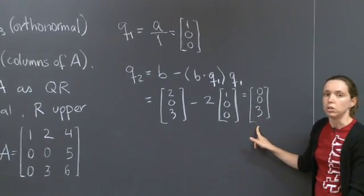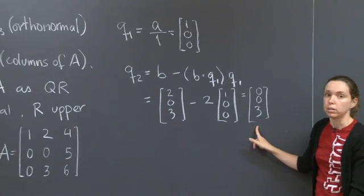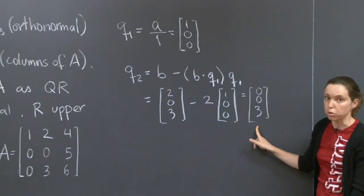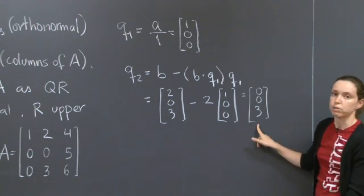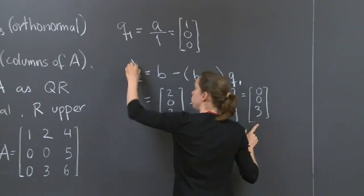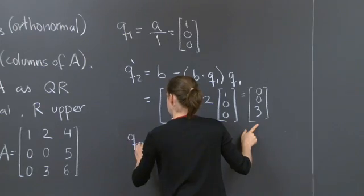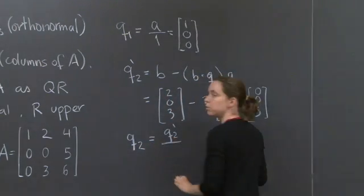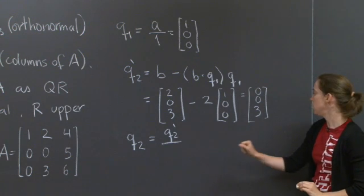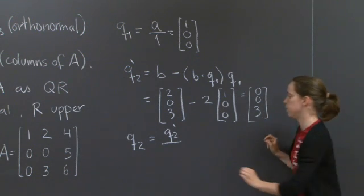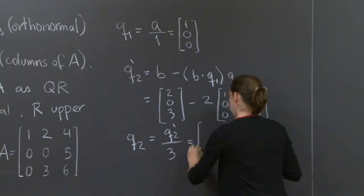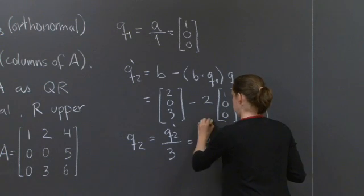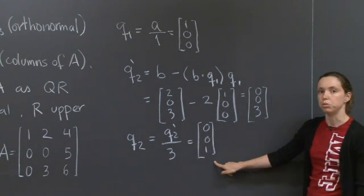We need it also to be length 1, because we want these two vectors to be orthonormal. So this is not actually Q2. Let's call this one Q2 prime and set Q2 equals to Q2 prime divided by its length, which in this case is 3, so Q2 is 0, 0, 1. That's my vector Q2.